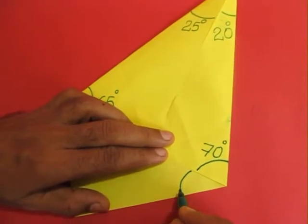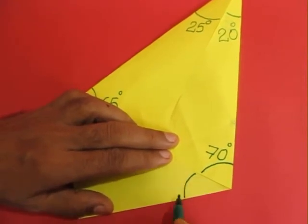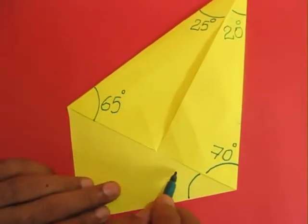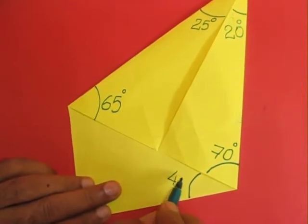Now the bottom was a straight edge. So 70 plus 70, 140 are gone out of 180. So this is a 40 degree angle.